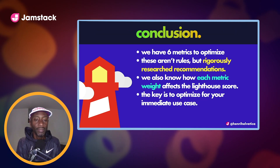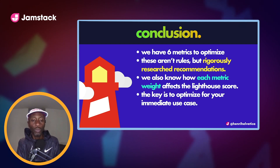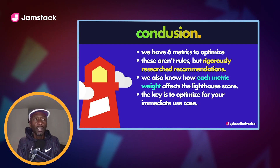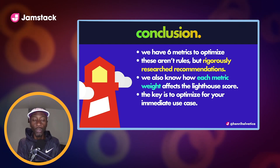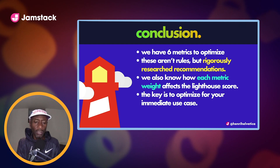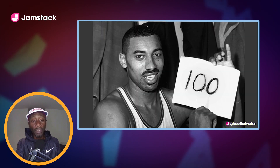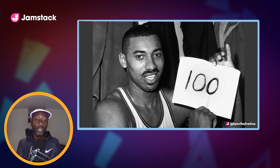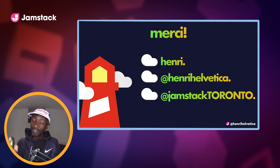In conclusion: we have six metrics to optimize or work with, but these are not rules — they are rigorously researched recommendations, essentially guidance. We now know what each metric weighs, so you'll know where to put the effort if things go south. Ultimately, the key is to optimize for your immediate use case. Like running — I used to look at distance, but now I focus on pace. That's what's most important. With that, you'll be able to achieve a 100 score, just like Wilt Chamberlain did back in the day. Thank you very much.